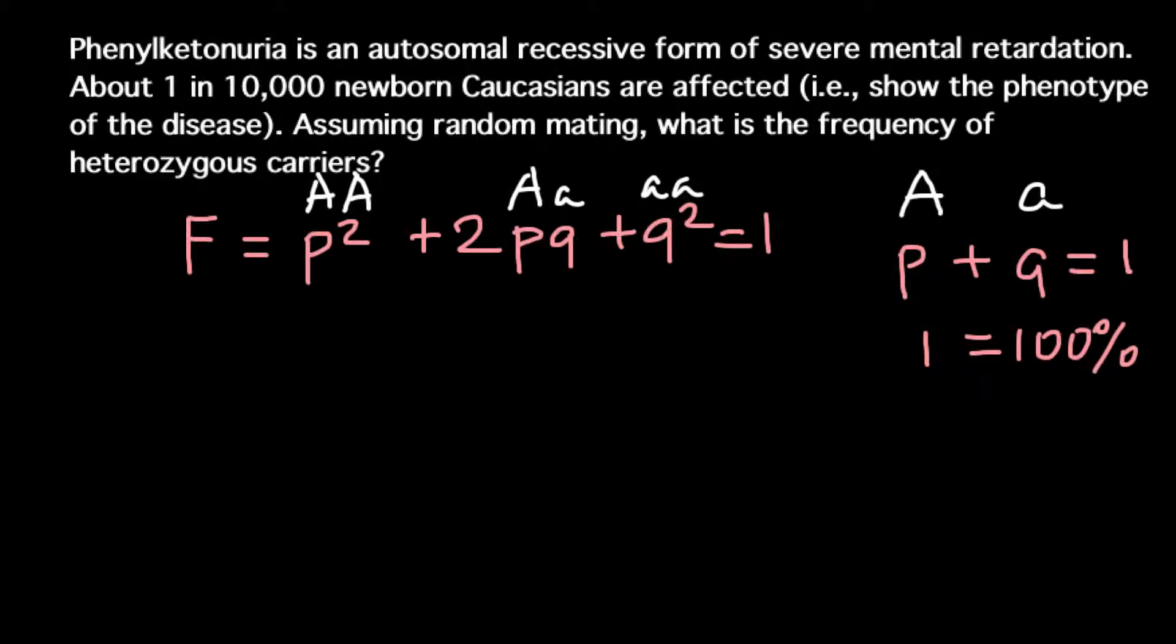So what we know? We know that one out of 10,000 newborn caucasians are affected. What does it mean? That means that people who are affected belong to this genotype. And genotype here equals to phenotype. So when we know that person is affected we can say that he is homozygous recessive.